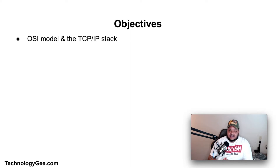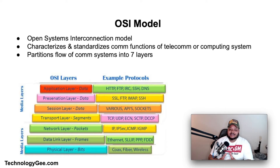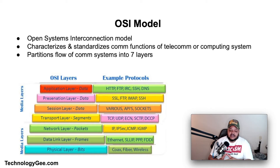The OSI model stands for the Open Systems Interconnection model. It is a conceptual model that characterizes and standardizes the communication functions of a telecommunication or computing system without regard to its underlying internal structure and technology. Its goal is the interoperability of diverse communication systems with standard communication protocols. The model partitions the flow of data into seven abstraction layers, from the physical implementation of transmitting bits across a medium to the highest-level representation of data of a distributed application. Each intermediate layer serves a class of functionality to the layer above it and is served by the layer below it.